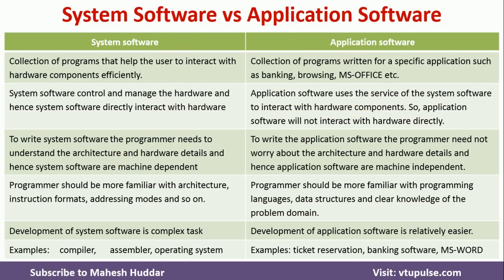To develop system software, the programmer needs to have knowledge of architecture and hardware details. Without those details, a developer cannot develop any system software. But when it comes to application software, the programmer does not need to worry about architecture and hardware details. For system software development, the developer should be familiar with architecture, instruction formats, and addressing modes, whereas there is no need for such knowledge when developing application software.